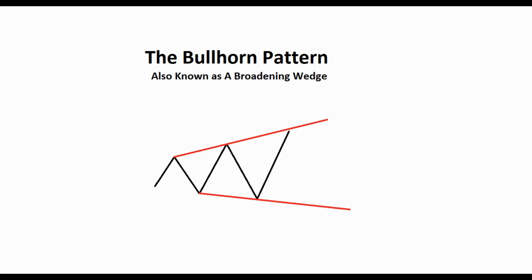Hello fellow traders, today we're going to be talking about a lesser-known pattern but still pretty profitable when found and traded correctly. It's called the bullhorn pattern. There are other names for it — the broadening wedge, the broadening top, the broadening bottom — but because of what it looks like, as you can see here in this picture, it looks like a big megaphone, so we call it the bullhorn pattern.